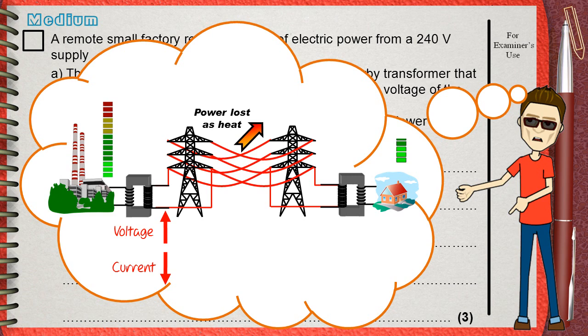Electricity is transmitted in the cables with low current intensity. This reduces the power loss as heat.